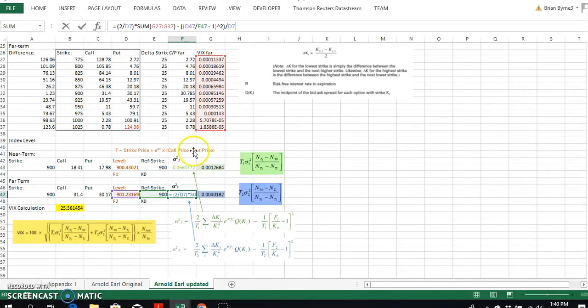And then we're subtracting away what? Subtracting away one over T2. So we're subtracting away - we're dividing by D2, that's our D7 again, so that's T2. And then we have F2 is D47, D47 divided by K0. K0 is E47. We subtract away one, we square it, we divide it by T2.